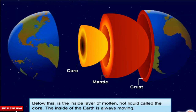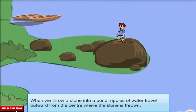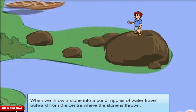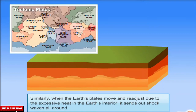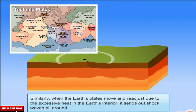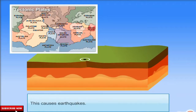The inside of the earth is always moving. When we throw a stone into a pond, ripples of water travel outward from the center where the stone is thrown. Similarly, when the earth's plates move and readjust due to the excessive heat in the earth's interior, it sends out shockwaves all around. This causes earthquakes.